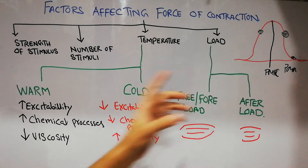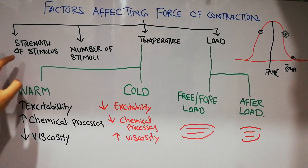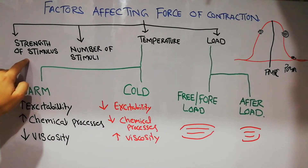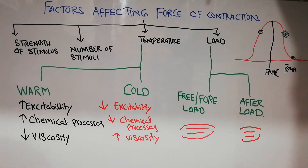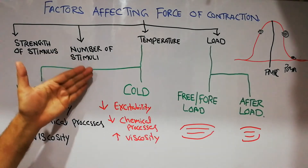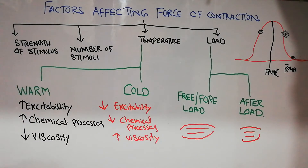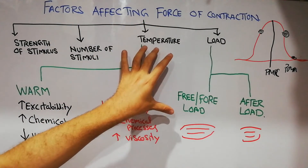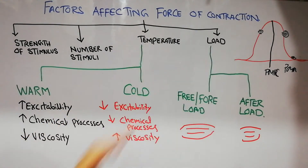Out of the four factors, we have discussed the effect of stimulus strength on contractility and the effect of increasing number of stimuli on the force of contraction. Today we are going to discuss the effect of temperature and load on muscle contractility.